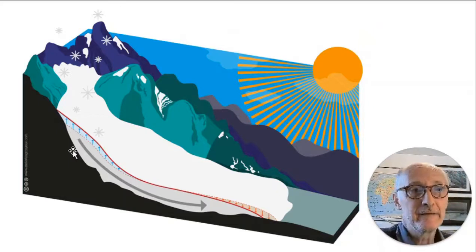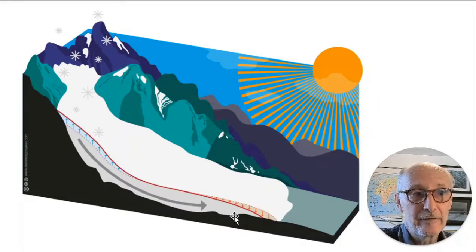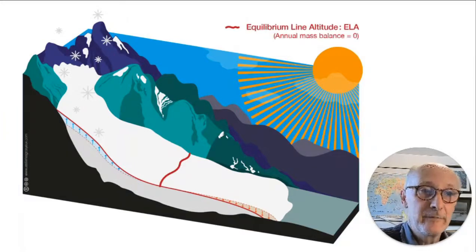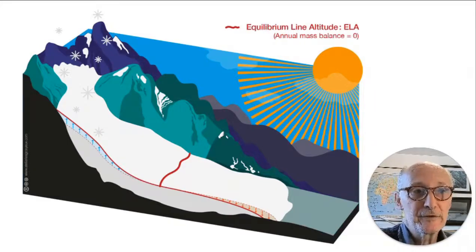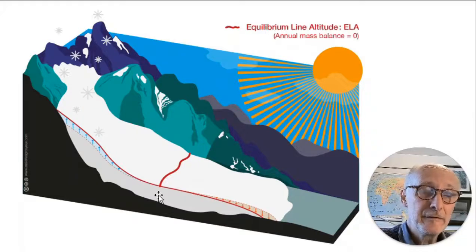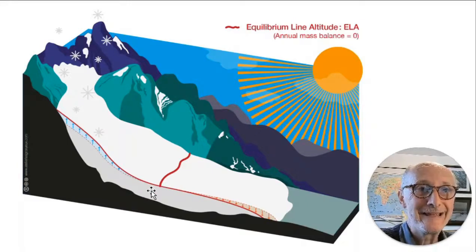In a glacier that's in some kind of equilibrium, that difference will be balanced by movement of ice from the upper areas through the glacier to the lower areas. In between the upper accumulation area and the lower ablation area, there's a zone or a line across the glacier where locally the mass balance is zero — the amount of accumulation is equal to the amount of ablation. That's referred to as the equilibrium line, and the position where that occurs is referred to as the equilibrium line altitude, the ELA.